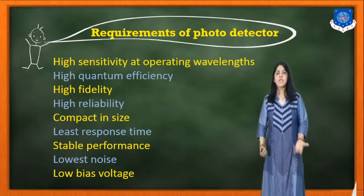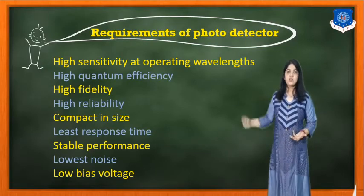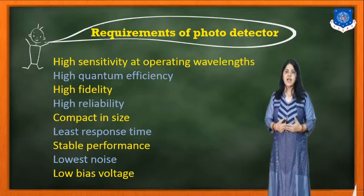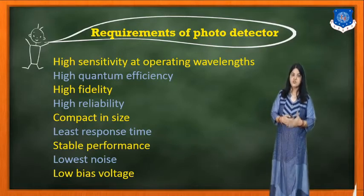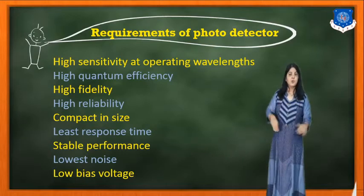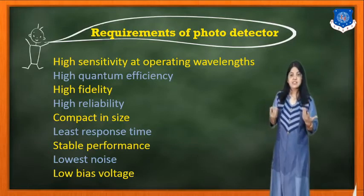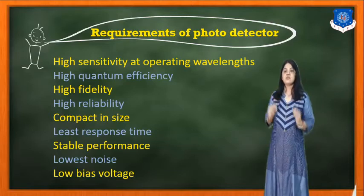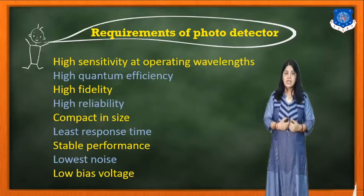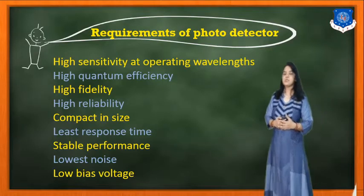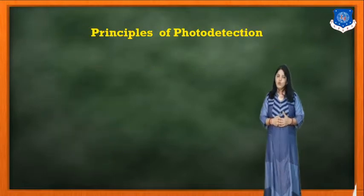When a photodetector is implemented in any optical system, we should take care of all these requirements. It should not operate at high bias voltage, should provide stable performance, and the noise produced by the photodetector itself should be minimal so that no noise is accumulated with the signal. It should also be compact in size, highly reliable, and have high quantum efficiency. When these requirements are fulfilled, it can be considered a good photodetector.